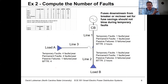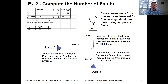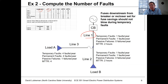The approach is to start by computing the various contingencies and the number of times they occur per year. For example, with three line segments, I'll have contingency locations for lines one, two, and three — covering temporary faults, permanent faults, and passive failures. For line segment one with a temporary failure rate of one per kilometer per year, multiplied by the line length, that gives me one fault per year. Similarly for permanent faults.